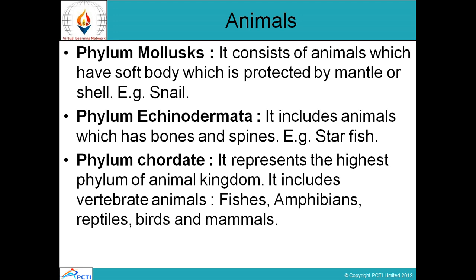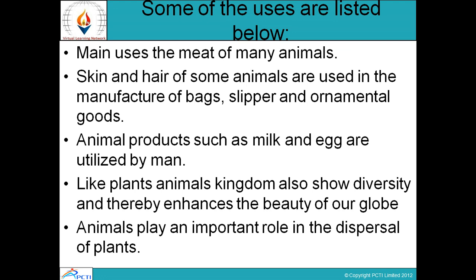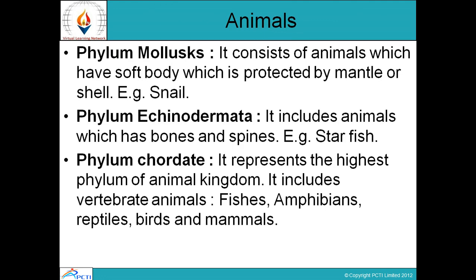Then comes phylum Echinodermata — it includes animals which have spines, such as starfish. Then phylum Chordata — it represents the highest phylum of the animal kingdom and includes vertebrate animals: fishes, amphibians, reptiles, birds, and mammals. There are further multiple divisions within this phylum, so all vertebrate animals come under Chordata.